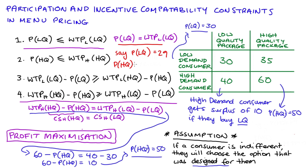If we price the low quality package at 29, the high demand consumer gets 11 dollars of surplus from it — 40 minus 29 — so we'd need to price the high quality package at 49 instead of 50. Any surplus we give to the low demand consumer, the high demand consumer gets as well, so we'd have to lower the price of the high quality option accordingly. The firm loses revenue when doing this. The profit maximization outcome is really when we charge as much as possible for the low quality option, which means unfortunately the low demand consumer must pay their full willingness to pay — at the equality, getting zero surplus.